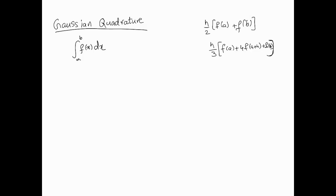In this video we're going to look at Gaussian quadrature. We've already seen quadrature, which really just means determining area — it's an old historical term basically meaning finding the area between the function f(x) and the x-axis. So let's get back to this. I have here the trapezoidal rule from Newton-Cotes and here we have Simpson's rule. I put these here so I can show you the philosophy behind Gaussian quadrature.